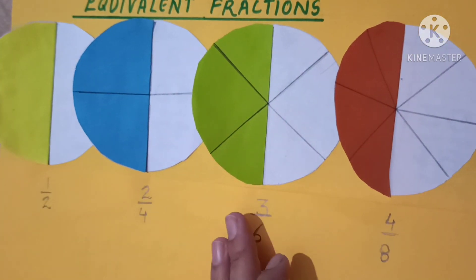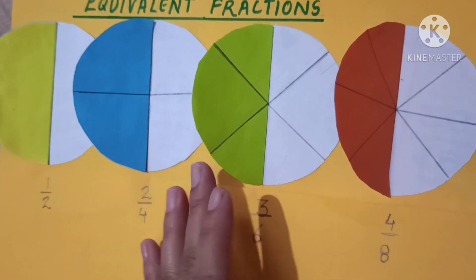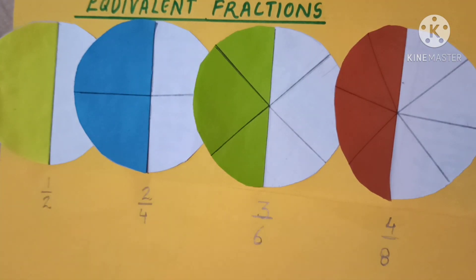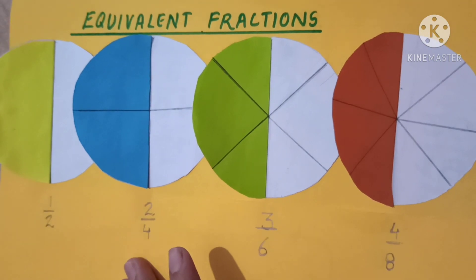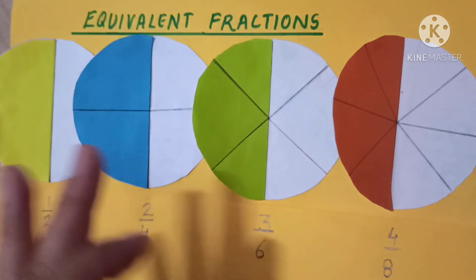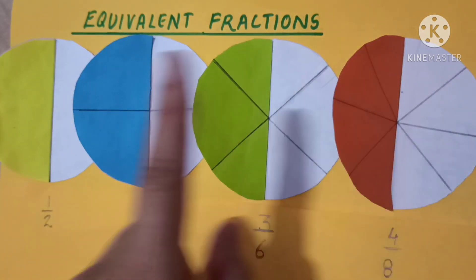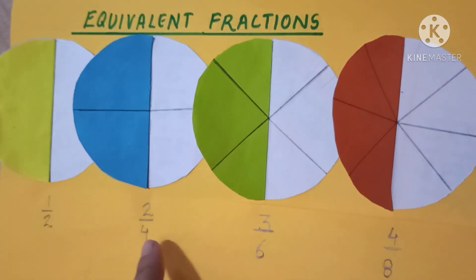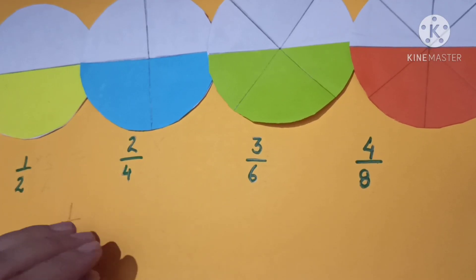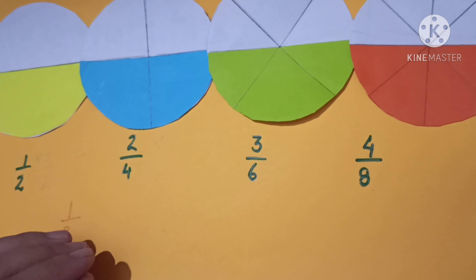The portion covered by the orange part in the last figure is half of the whole circle. Similarly, the portion covered by the green part is half, the blue part is half, and the yellow part in the first one is also half of the whole figure. The fractions are different, but the portion covered by them is equal. So these fractions are known as equivalent fractions.